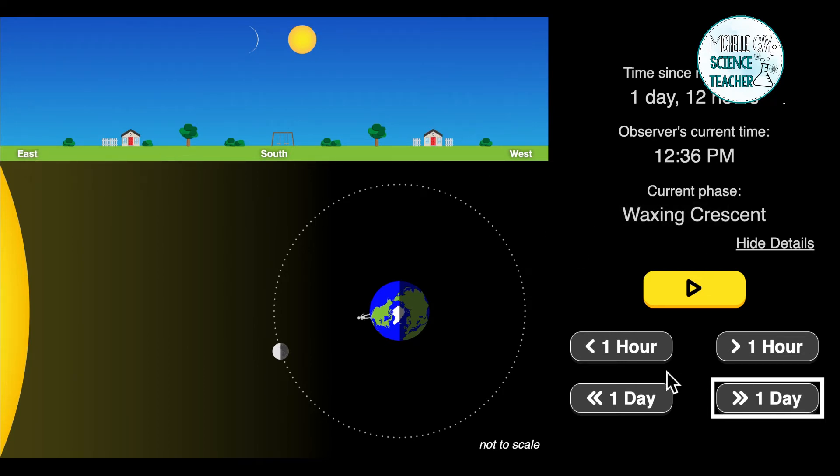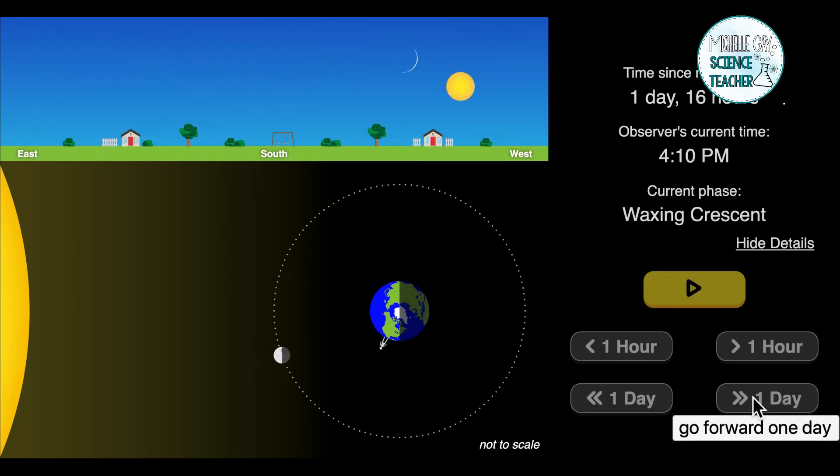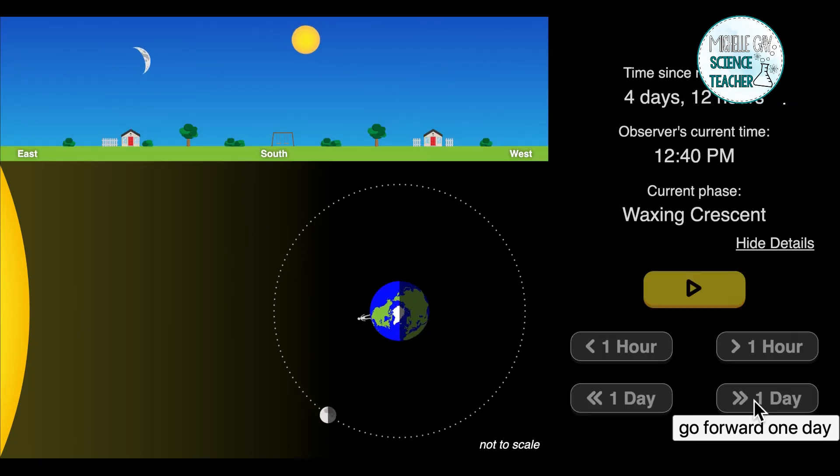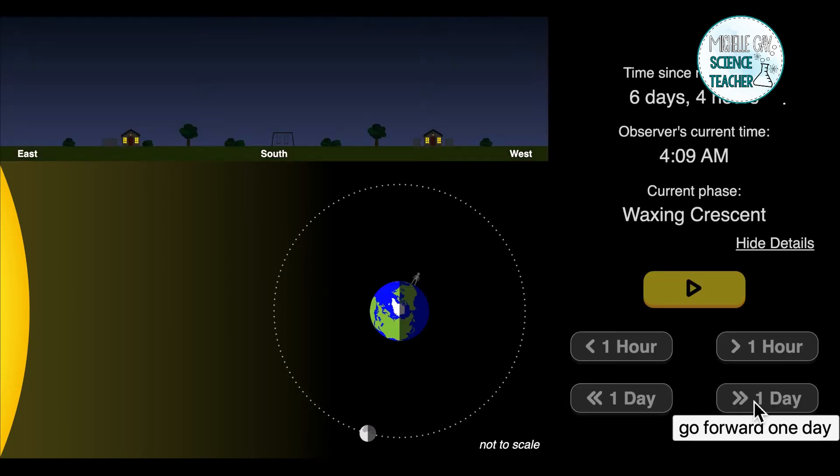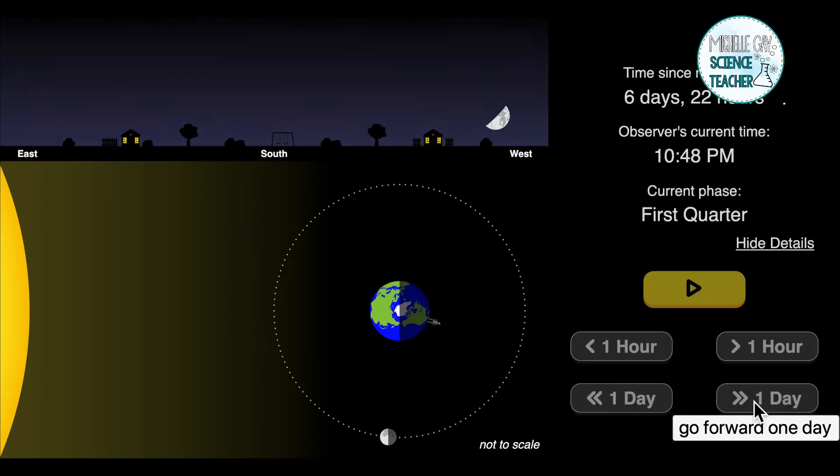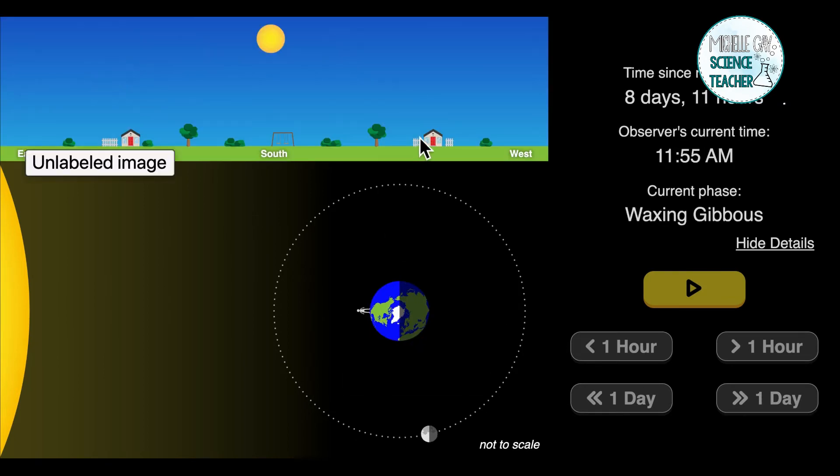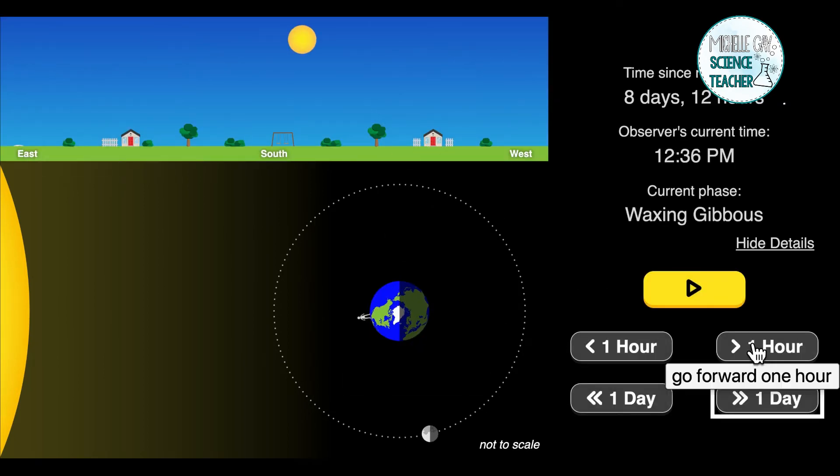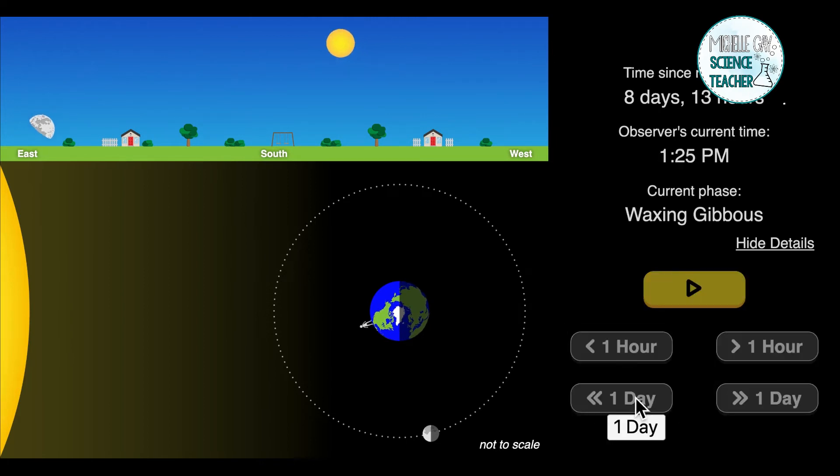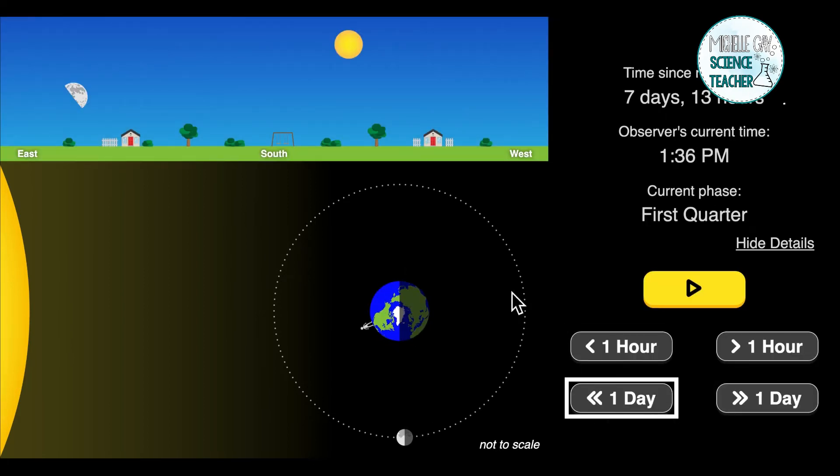It's going to move from the waxing crescent to the first quarter. Look, we're on day seven. I'm going to go back a day. There we go, we're on day seven, 13 hours, and we're in the current phase of the first quarter.